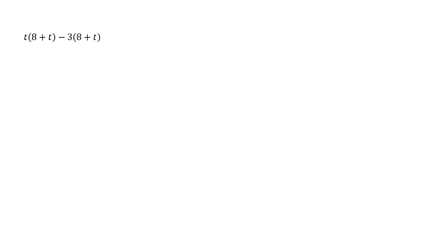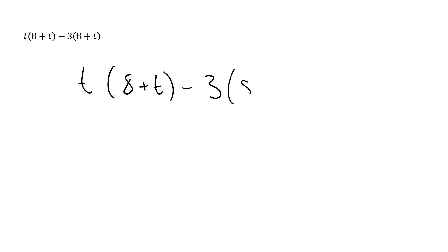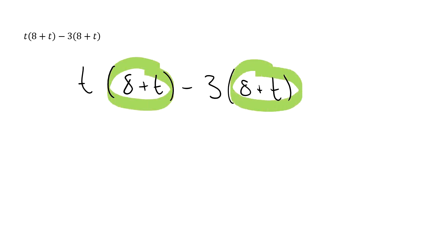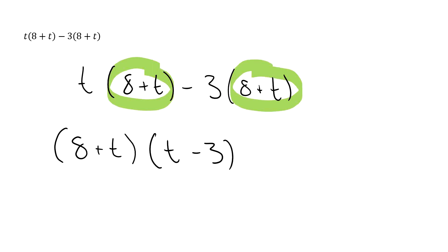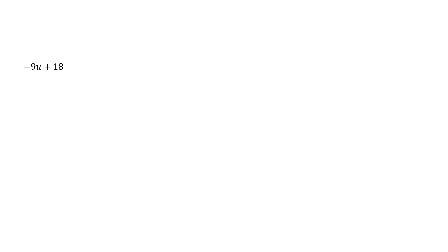Here we have a slightly different type — a binomial common factor. You'll notice that the same bracket expression appears in both terms, so those are our highest common factors. We write that bracket expression out the front, and what's left over goes inside new brackets. Think of that whole bracket expression as one common factor that comes out the front, and what you're left with goes in brackets.